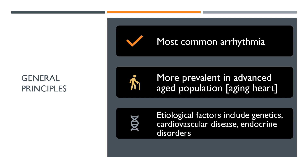Atrial fibrillation is considered the most common sustained arrhythmia. It is more prevalent in advanced age population, possibly because of aging heart. Etiological factors include genetics, cardiovascular disease, endocrine disorders, sedentary lifestyle, high blood pressure, tobacco abuse, alcoholism, caffeine use, hypothyroidism, electrolyte imbalance, and other disease processes that influence the automaticity of the heart such as COPD and PE. The list is exhaustive.